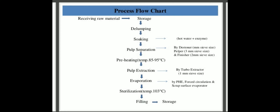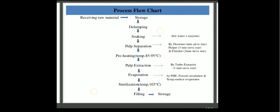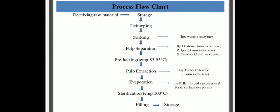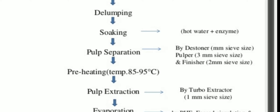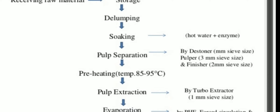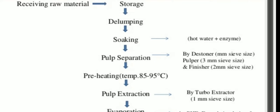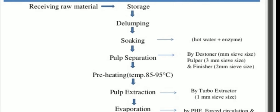After storage, de-lumping is done — the lumps or slabs packed in gunny bags are de-lumped and soaked in hot water with pectic enzymes. Pectin is a polysaccharide that gives structure to the tamarind pulp. Hot water with pectic enzymes is used to de-pectinize — dissolve the pectin — during soaking to facilitate pulp separation.